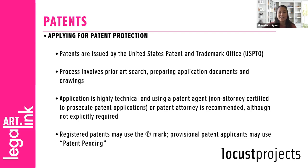Once a patent is registered, the owner can use the registered patent mark — that circle P mark — to denote patent protection. The term 'patent pending,' which you might see, is used for provisional patent applications, which don't get reviewed but hold the date of the patent for one year. When the official patent application is filed, it gets dated back to that one-year provisional patent application — that's what patent pending means.